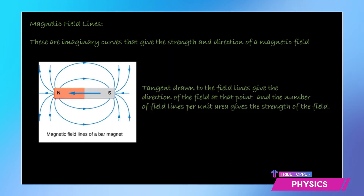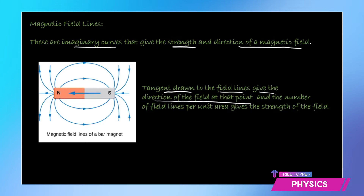Now how do we figure out the direction of the magnetic field? For that we have magnetic field lines. If we define magnetic field lines, we would simply say these are imaginary curves that give the strength and direction of a magnetic field. The tangent drawn to the field lines gives the direction of the field at that point. So if I draw a tangent here, that gives me the direction of the field; draw a tangent here, that gives me the direction of the field. At every point, if you draw a tangent, that gives us the direction of the magnetic field.